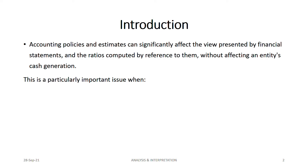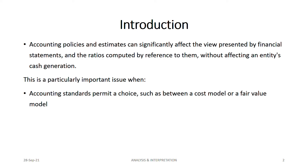This is important for three reasons. Number one: accounting standards permit a choice. Some standards give you a choice — for example, IAS 16 and IAS 40 on property, plant and equipment say you can either value your assets using the cost model or the fair value model. The choice is yours, and you can use whichever model gives you better ratios and shows your company in a better light.